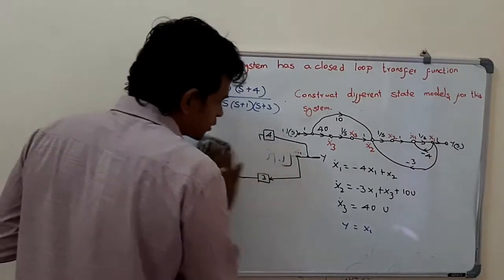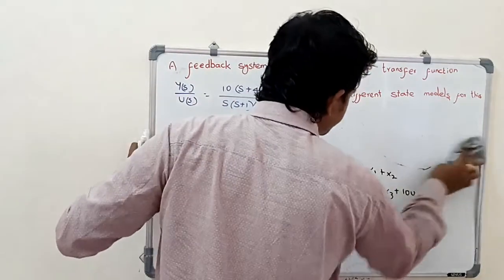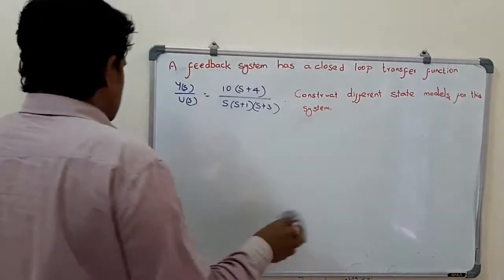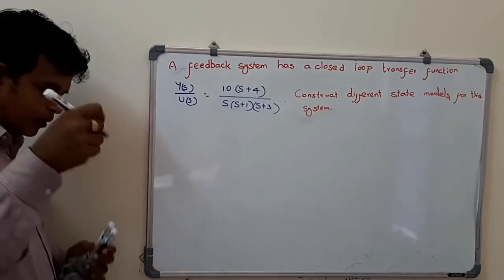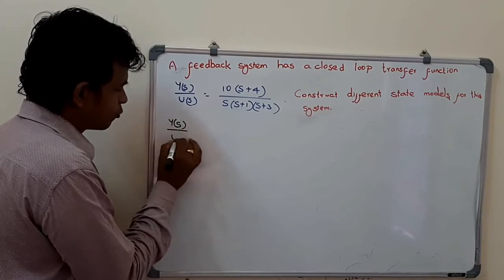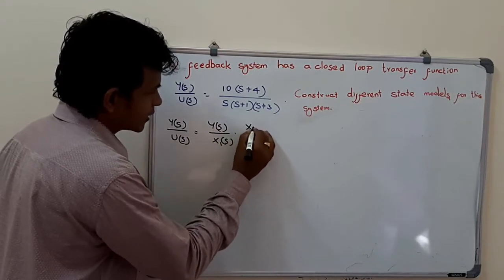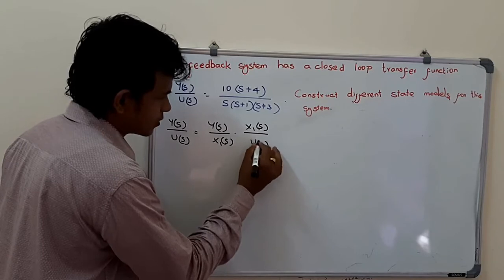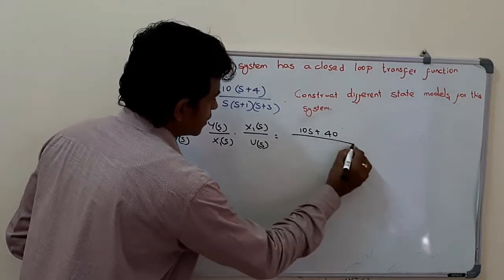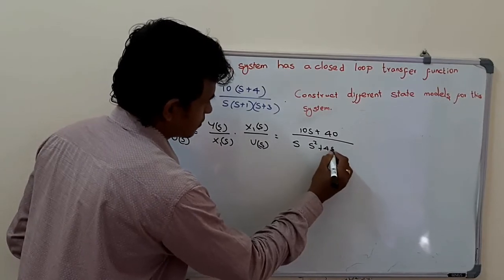There is another approach by which we can derive the state model. Here we are introducing one intermediate variable x1 of s. Y(s) divided by U(s) can be written as Y(s) divided by x1(s) into x1(s) divided by U(s), which is equal to 10 into (s + 40) divided by s into (s squared + 4s + 3).